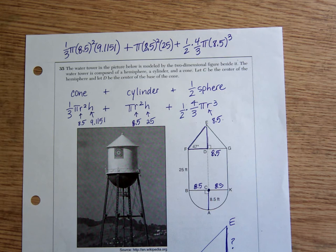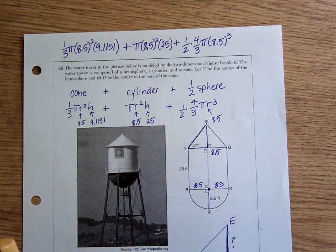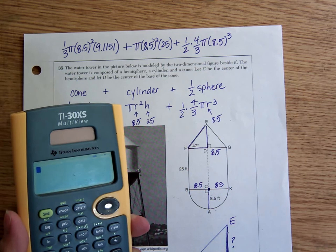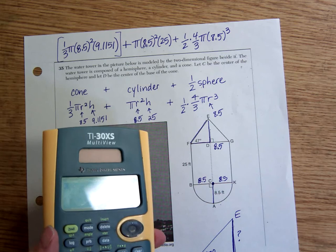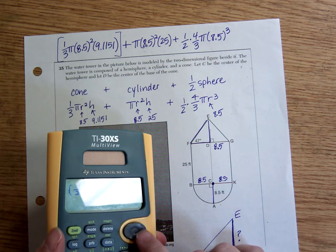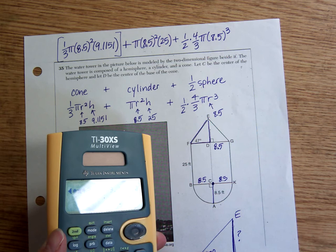I could either try to put all of this into my calculator at once, or I could try to split it up. I could go ahead and calculate this, write it down, calculate this, write it down, calculate this, write it down, and add. I'm going to put it all in, but let me just point out to you, the more you have to put in your calculator at once, the more careful you have to be that you put it in correctly. So for instance, I'm going to make sure the calculator knows all of this needs to be multiplied together before I do any addition. So I'm going to put it all in parentheses. So I'm going to do 1 third, and I'm using the fraction button here just because it makes it a little bit easier to see, times pi times 8.5 squared times 9.1151. All of that was the cone.